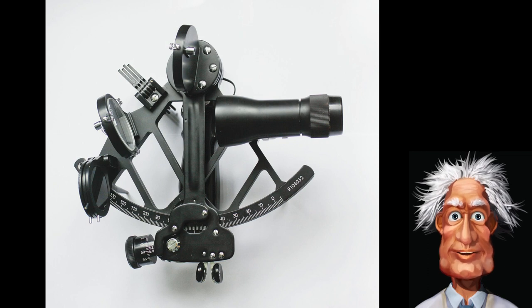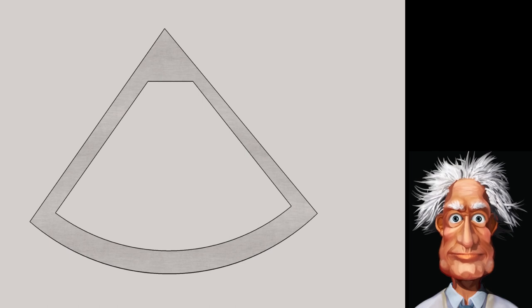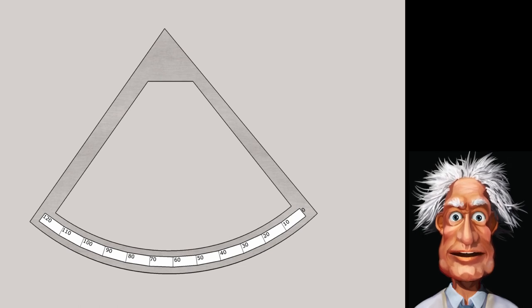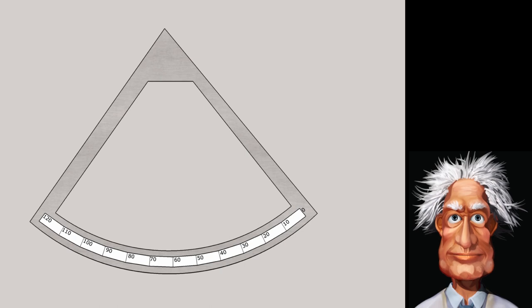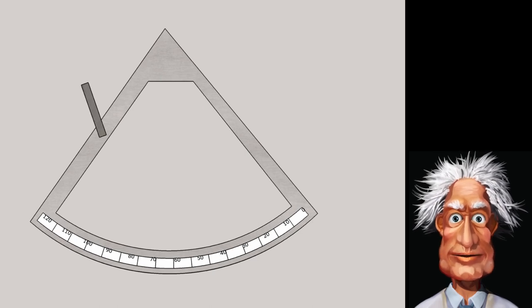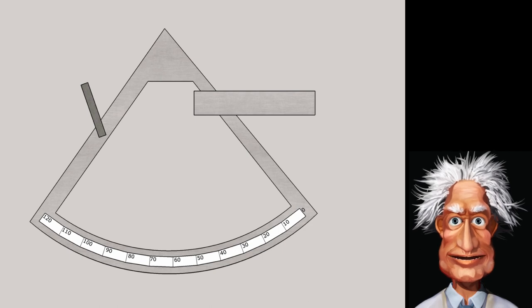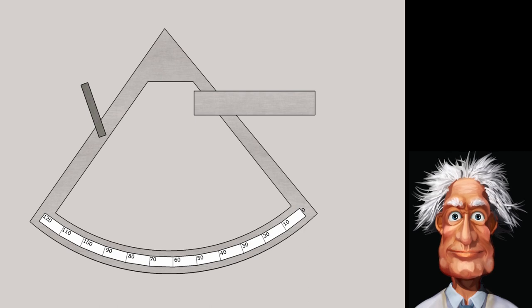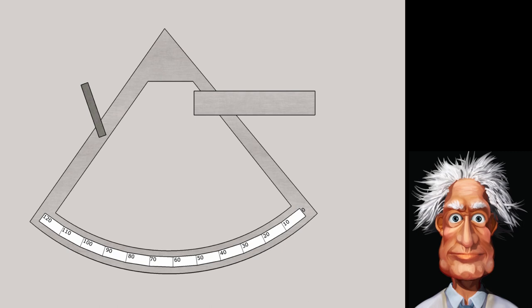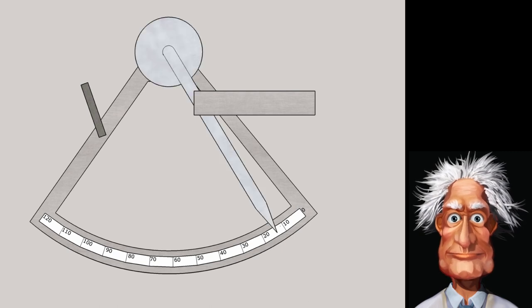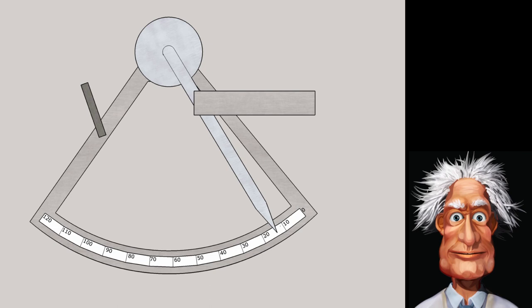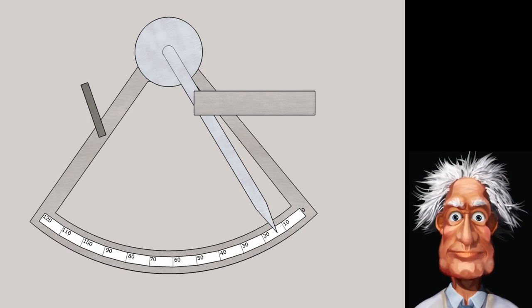A sextant consists basically of a triangle-shaped base with a curved bottom. The angle between the two legs is 60 degrees. On the curved bottom, you will find an index scale, divided in equal parts from 0 to 120 degrees. There is one horizon mirror mounted on the left side and a telescope on the right side. The horizon mirror is split in the middle vertically, the left side is transparent, the right side is a mirror. On top, there is an index arm mounted that can rotate around the center point of the bottom curve. This is a schematic depiction.